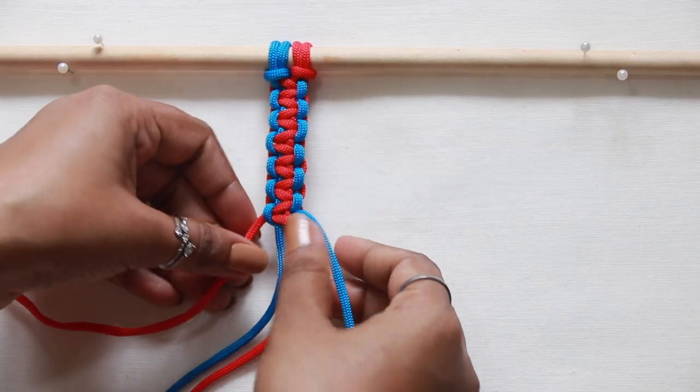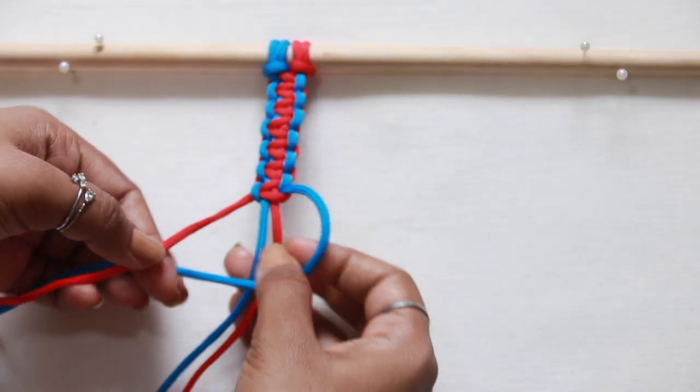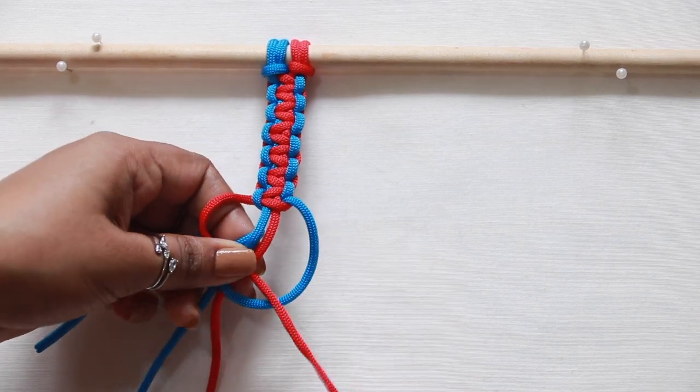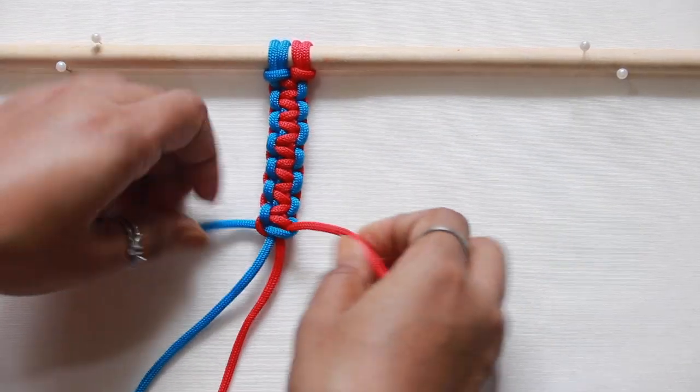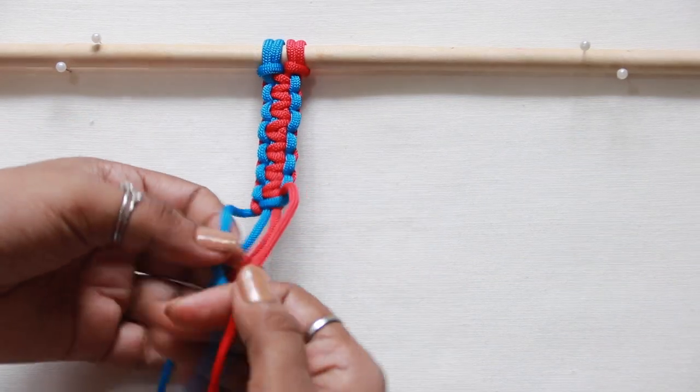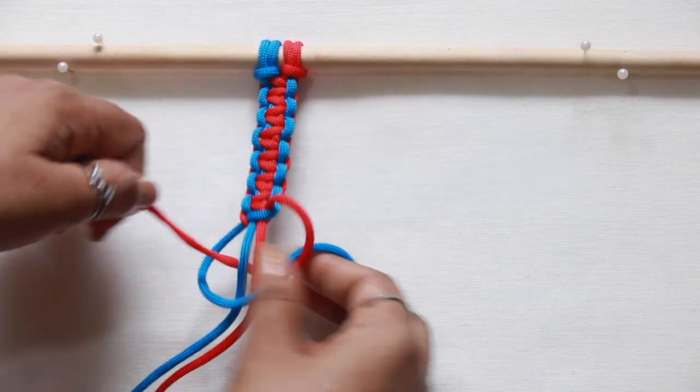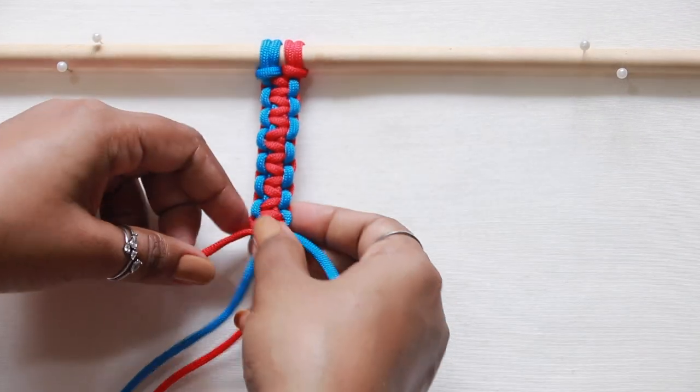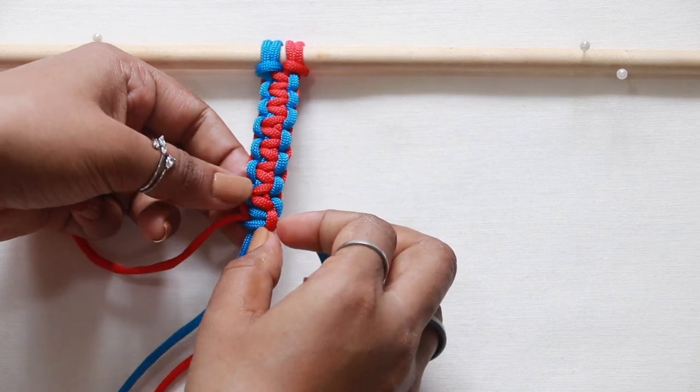At times, when you miss the track of the sides you started from and end up messing it or repeating on one side, keep this thing in mind. When you start from one side, the strand on top is formed on the opposite side.